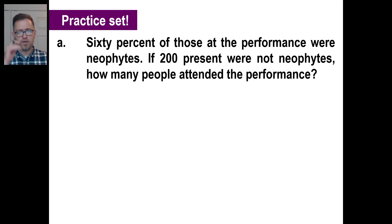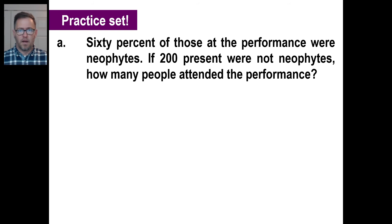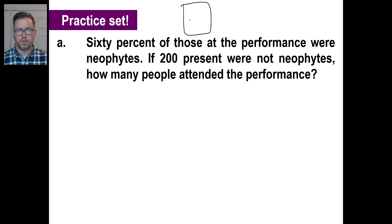Let's try practice problem A — pause it and give it a whirl. 60% of those at the performance were neophytes, or newbies. Let's draw a picture: 60% are neophytes. 200 present were not neophytes. How many people attended the performance? In other words, we want to know what the entire total is.